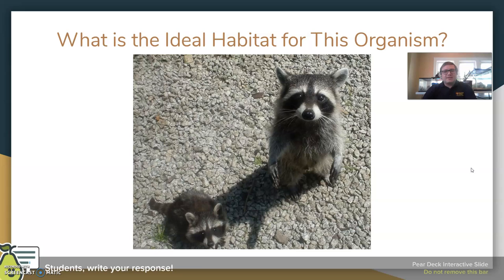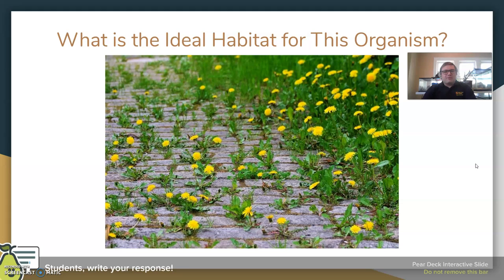But then it gets a little bit tricky when we start looking at some animals that can generalize into more habitats than just one. So if we think about raccoons, for example, raccoons are able to function well in woodland environments, they do well near streams, and they also do well in human cities. So they have a few different places that they do pretty well in because of their adaptability.